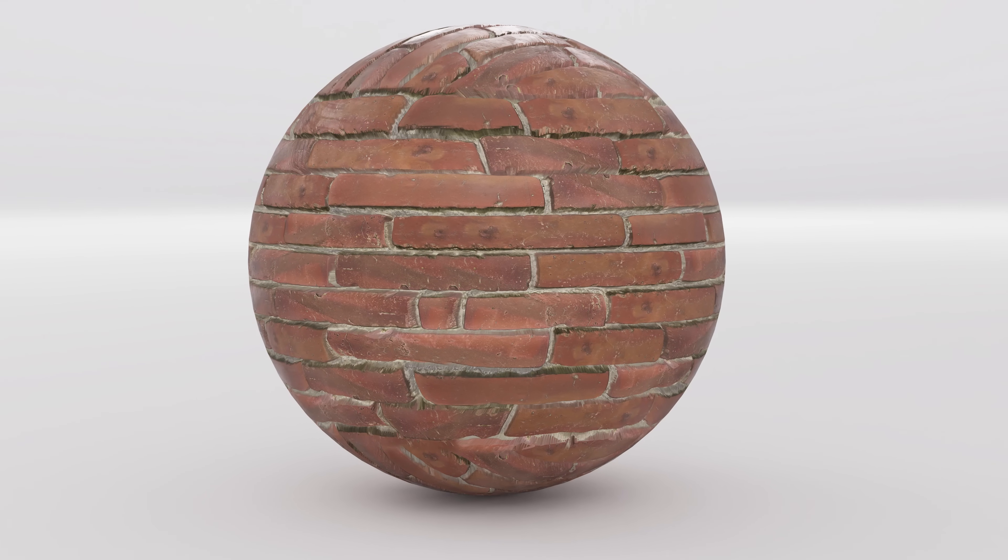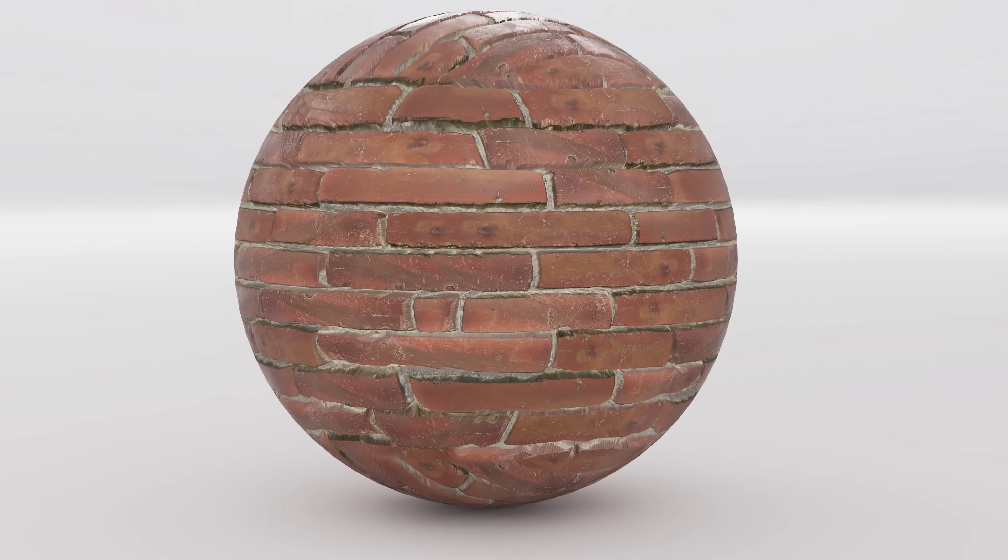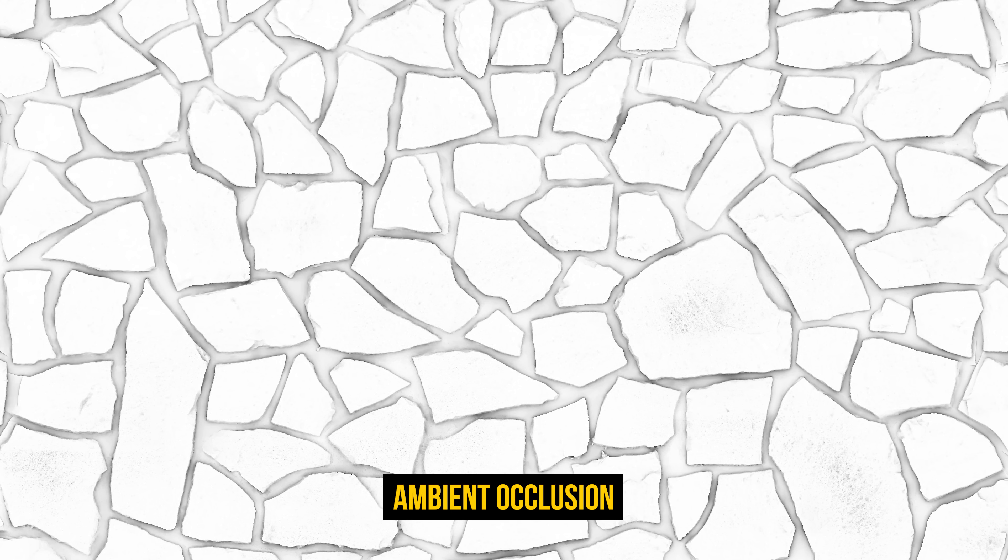Most PBR materials come with a set of maps like Albedo, Normal, Roughness, Displacement, and Ambient Occlusion. You don't always need to use all of them, but the more you do, the more realistic your result will look. So now that we've got that covered, let's jump into the list of the best sites where you can find high-quality PBR textures for free.